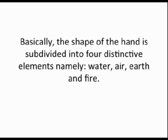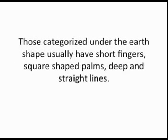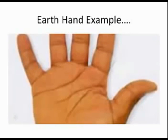The four elements are water, air, earth, and fire. Those categorized under the earth shape usually have short fingers, square-shaped palms, and deep and straight lines.